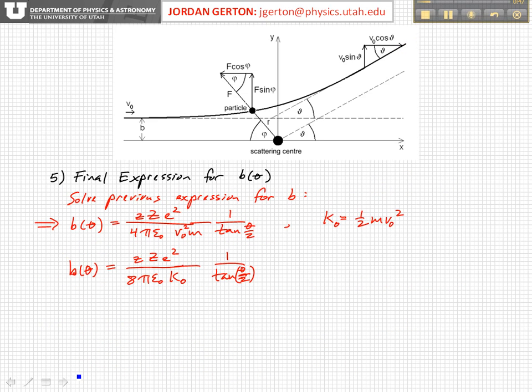Okay, and when we do this, we get that B of theta is equal to little z times big Z, E squared over 4 pi epsilon naught V sub 0 squared M times 1 over tangent of theta over 2.